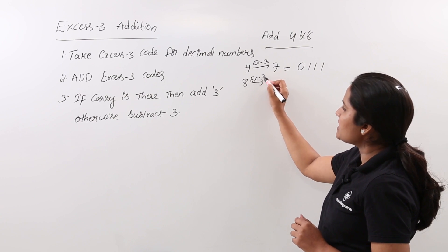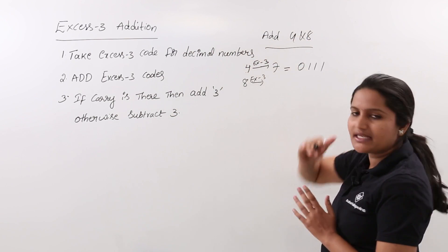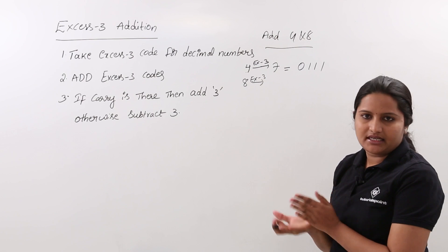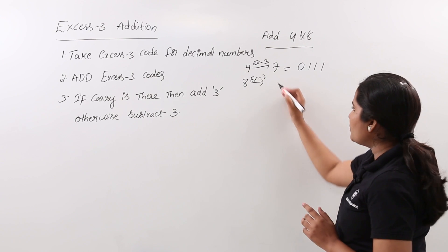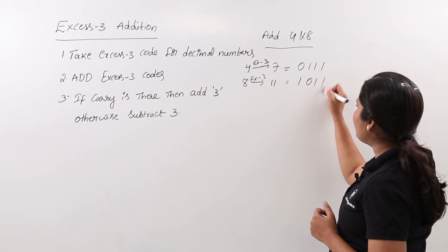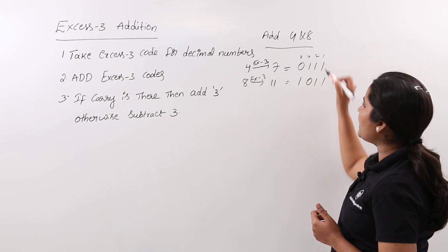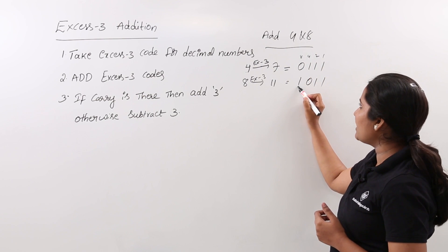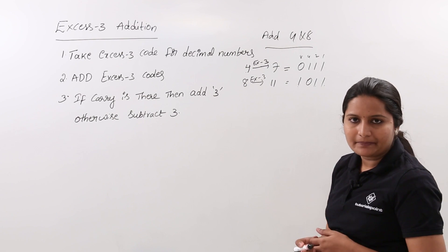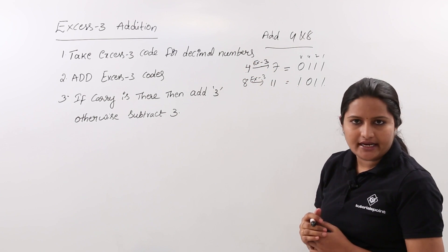For 8, we also need to take it in XS3 form because we are doing XS3 addition. The XS3 for 8 is 8 plus 3 equals 11. In binary, 11 is written as 1011. If you have any doubt in decoding, use 8-4-2-1 as reference: at the 8 place we have 1, and at the 2 and 1 places we have 1 each, giving 8 plus 2 plus 1 equals 11. So we have taken XS3 for both 4 and 8.